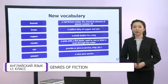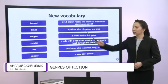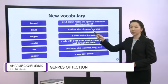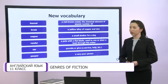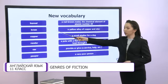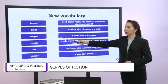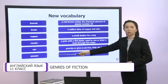Now let's look at some new vocabulary that we will meet in the text. On the screen you can see six new words and their definitions. Let's read the words together: kennel, brass, copper, render, ore and papa.